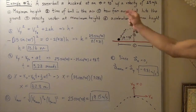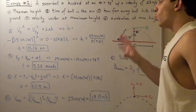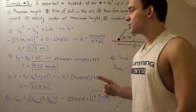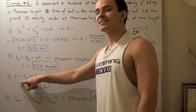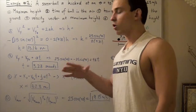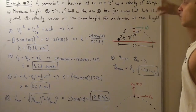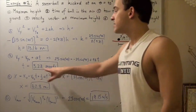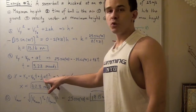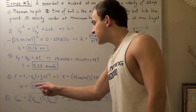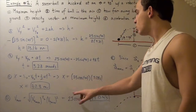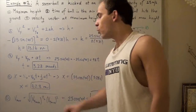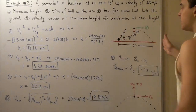For Part C, we want the horizontal displacement x. Using the kinematic position equation: x-initial is zero, horizontal velocity is 25 cosine 40, time is 3.28 seconds, and horizontal acceleration is zero — so that term drops out. Multiplying horizontal velocity by time gives x = 62.8 meters. So the ball travels 62.8 meters horizontally.